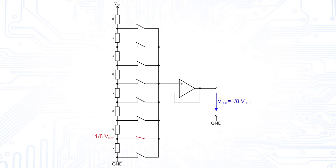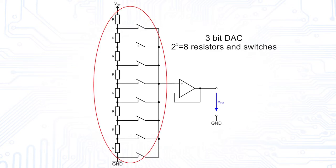It features an intrinsic monotony and its linearity is dependent on the matching of the resistors. Unfortunately, it needs 2 to the power of n resistors and its resolution is therefore very limited, since a lot of resistors need a lot of chip area and cause several other problems.